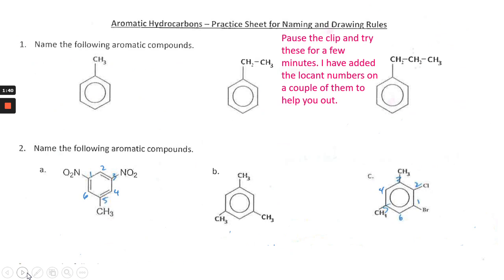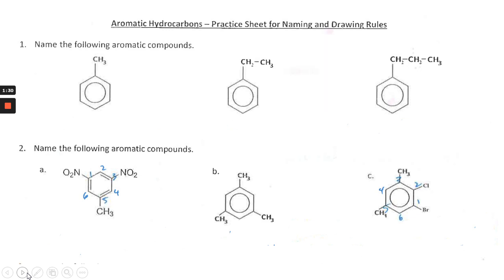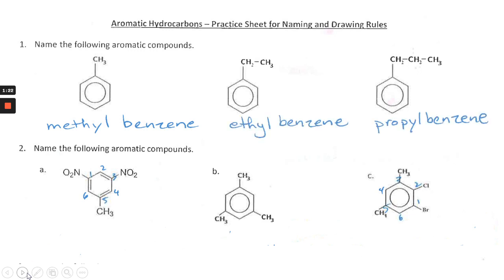Pause the clip and see if you can try some of these — I've added the locant numbers onto a couple of them to help you out. Assuming you've had a go, the first one is obviously methylbenzene as mentioned before. Then we have ethylbenzene and propylbenzene. In the bottom left-hand corner, you can see that the benzene ring is drawn as a Kekulé structure. Ideally at OCR A-level, it's drawn as a delocalized pi ring with the circle inside the hexagon, but in this case we're just looking at the naming, not the structure of the drawing.